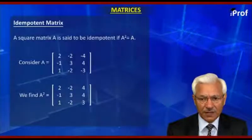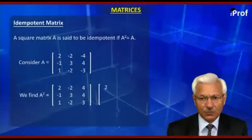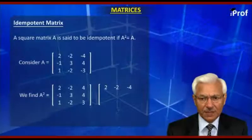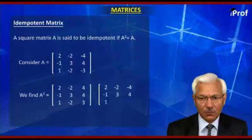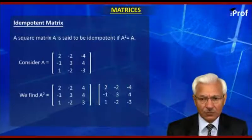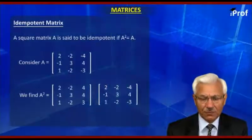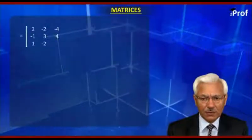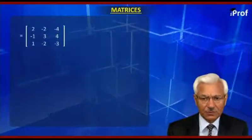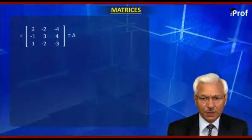The second matrix is the repeat of A: [2, -2, -4; -1, 3, 4; 1, -2, -3]. When we find that product, we find that product is also equal to [2, -2, -4; -1, 3, 4; 1, -2, -3], which is also equal to A.